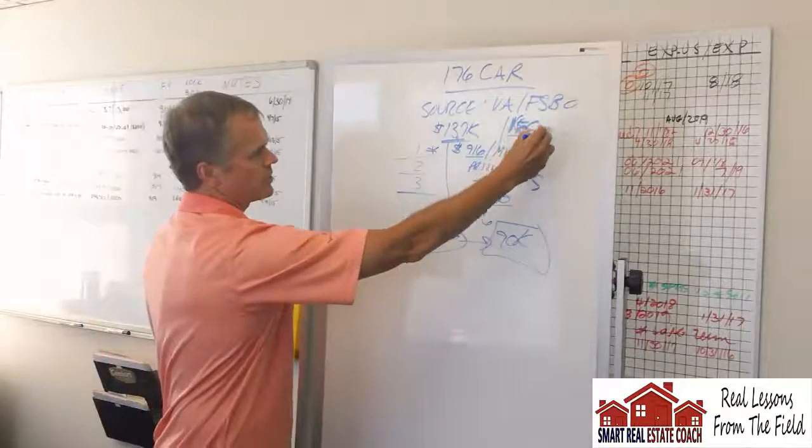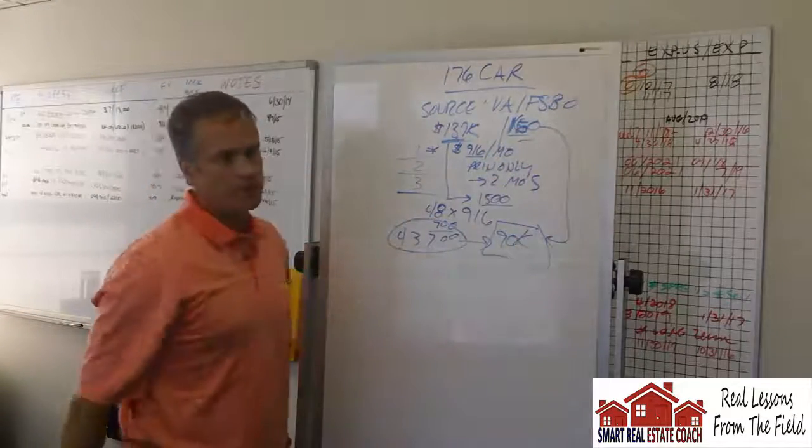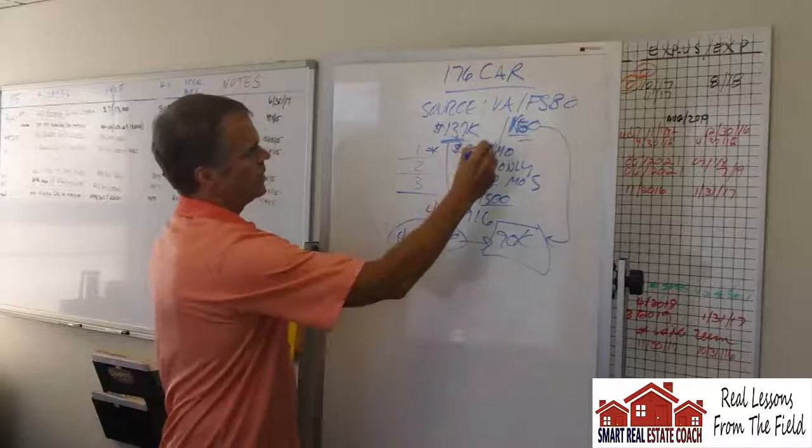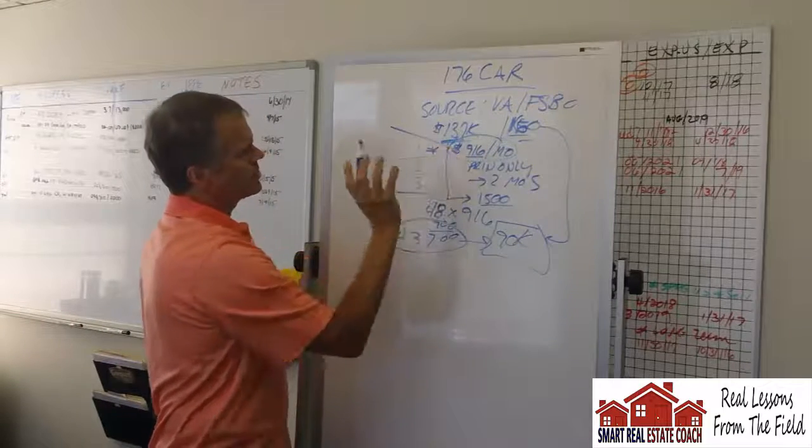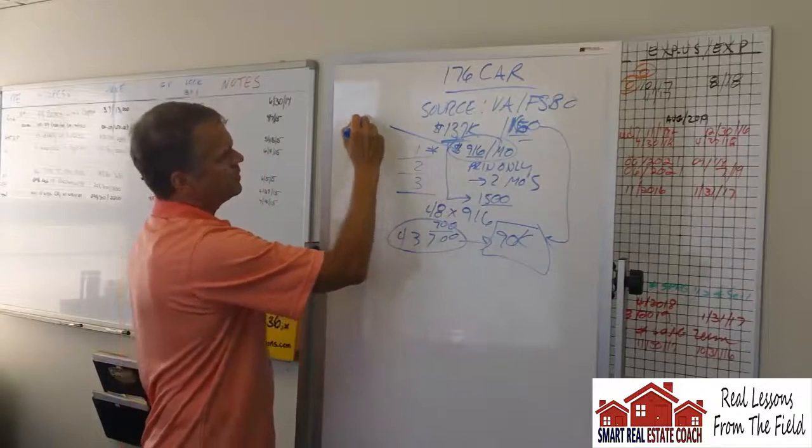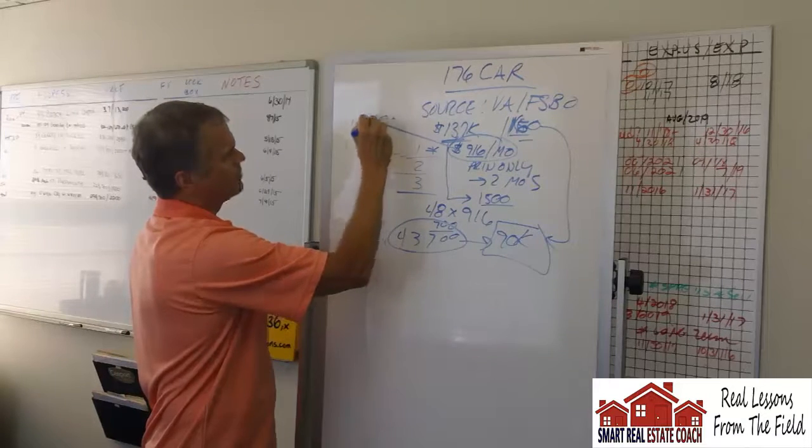I'm going to owe about 90 at the end of the 48 months. I'm going to sell it for 160. That's a $70,000 spread. Plus, I'm going to lease it out, probably conservatively, only $1,250. I'm being conservative.